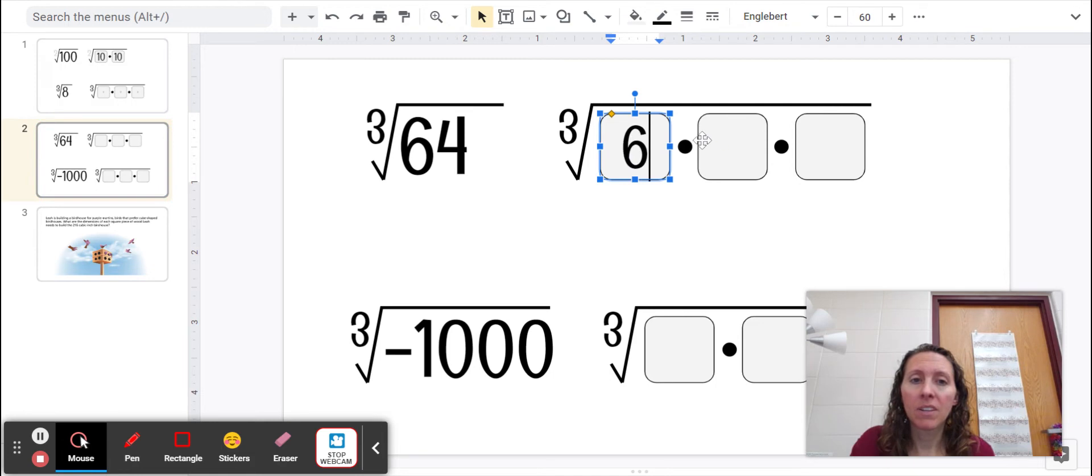Maybe let's try 6. 6 times 6 is 36, but 36 times 6 would be definitely over 64, so that's going to be too large. It's probably not going to be 5 because 64 is an even number. So let's try 4.